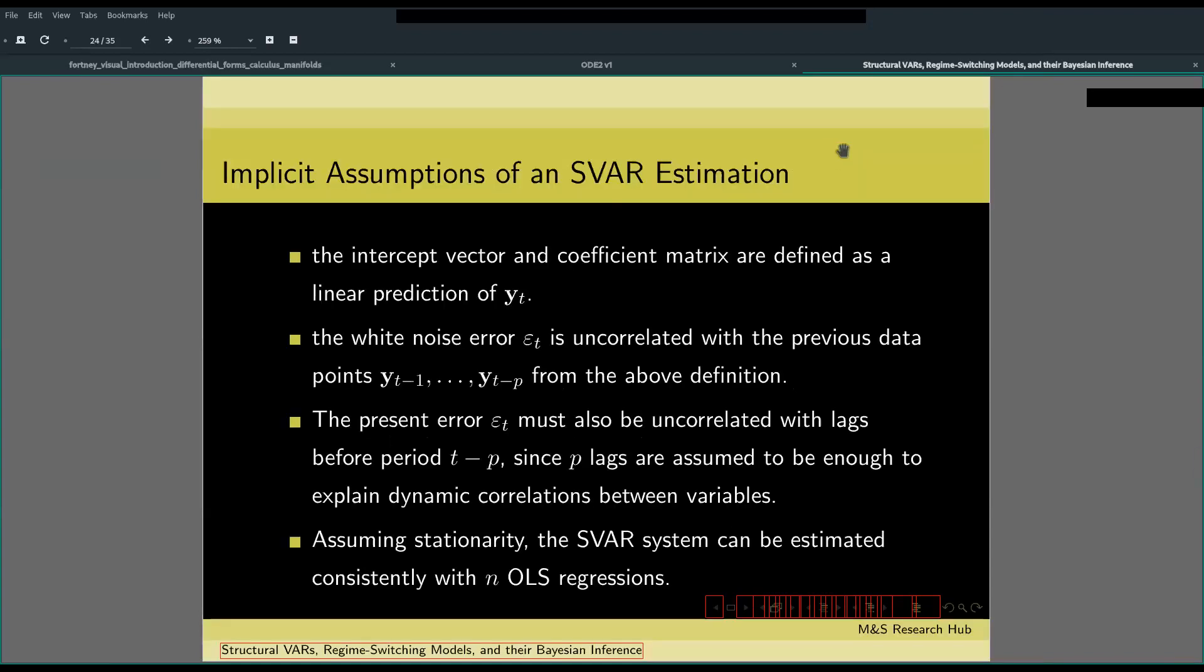Vector autoregressions have the following implicit assumptions. First, the intercept vector and coefficient matrix is a linear prediction of the dependent variable. As such, assuming stationarity, the SVAR system can be estimated consistently with n OLS regressions.